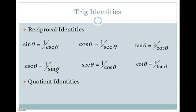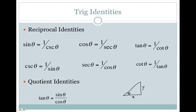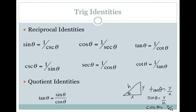For the quotient identity, we can write tangent as sine divided by cosine. Think about this with a triangle. Here's our triangle and our theta. We'll call the sides y, x, and hypotenuse. We know that tangent of theta is your opposite side over your adjacent side, which in this case would be y over x. Sine theta is opposite over hypotenuse, and cosine theta is adjacent over hypotenuse.